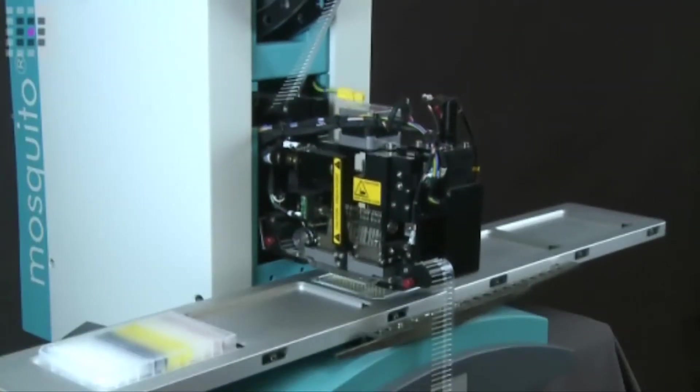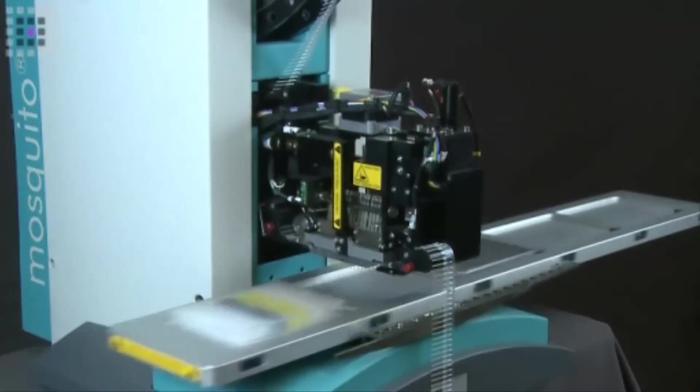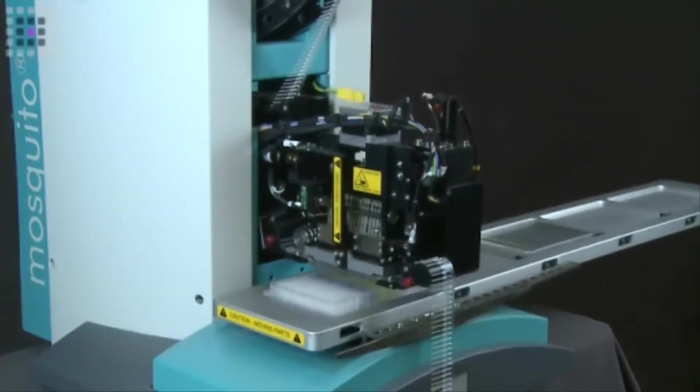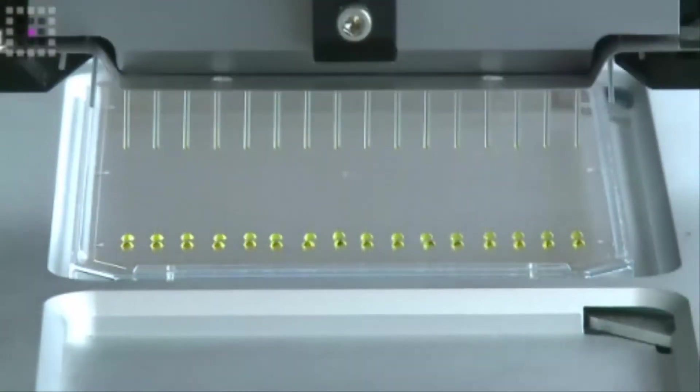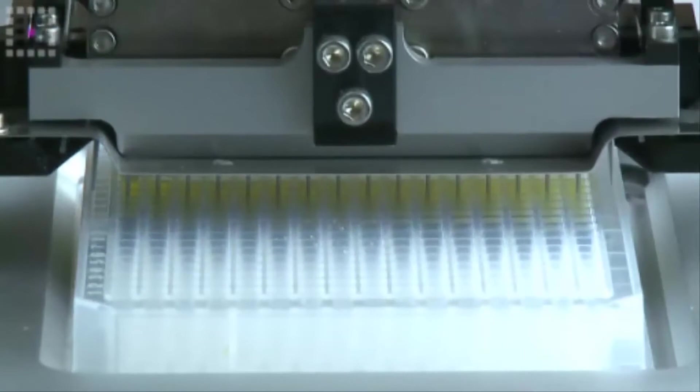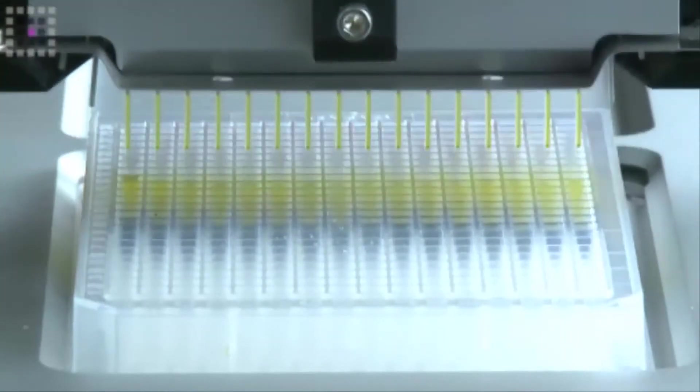Here we're pipetting out a traditional serial dilution where the diluent is actually dyed yellow. This would typically be a plain DMSO or a plain buffer that we're going to dilute the compound through. In this case we've tinted it with yellow dye.